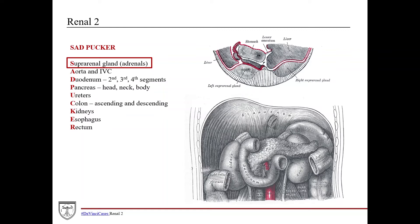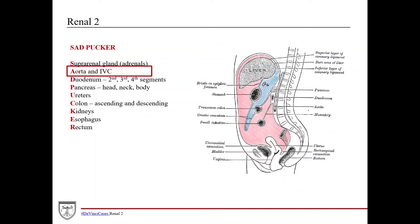The acronym or mnemonic you can use to remember these is SAD PUCKER. S is for suprarenal — the adrenal glands, or suprarenal glands, sit on top of the kidneys, which are also retroperitoneal. You can see in the cross section the left suprarenal gland here, with the kidneys tucked back along the posterior abdominal wall. A is for aorta and IVC. The aorta and IVC run just anterior to the vertebral column, so they are retroperitoneal. The main branches of the aorta, especially the renal arteries, are also retroperitoneal.